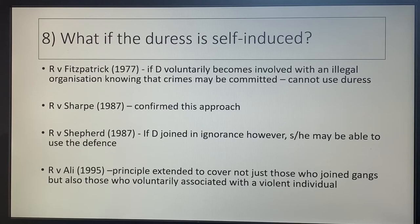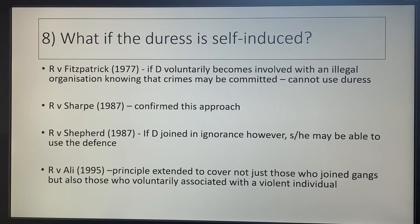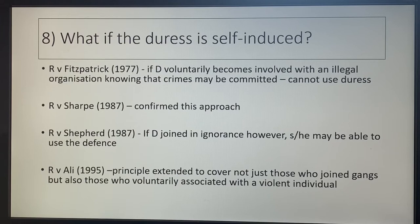RV Shepard slightly modified this — if D joined in ignorance, not knowing they would be asked to commit those crimes and had no idea they were violent, they might be able to use the defence. In Shepard, he joined a gang and didn't know they used violence; he just thought they stole stuff. RV Ali extended this principle of self-induced quite extensively — it covered not just joining gangs but voluntarily associating with a violent individual. In Ali, he was told to rob a bank or he'd be killed. He knew the person was violent and continued to hang around with him, so the court said he couldn't use duress.